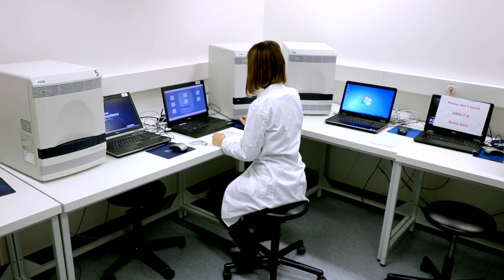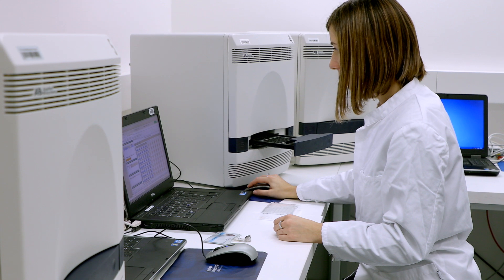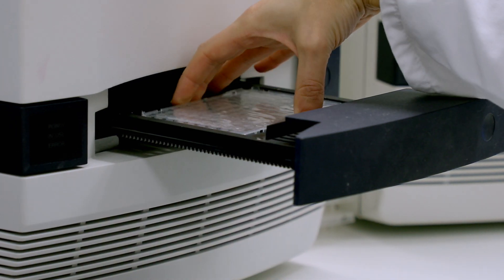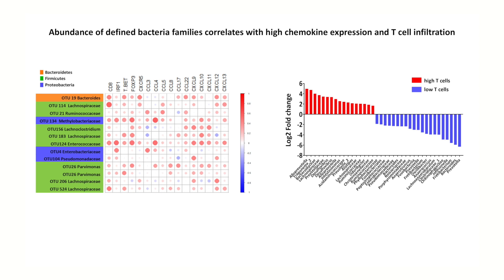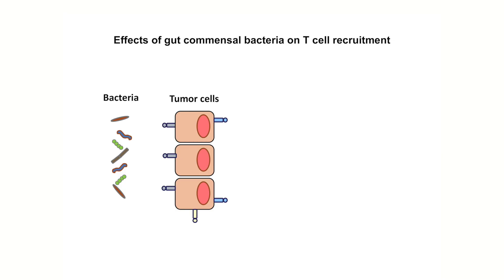Prompted by these findings, we analyzed the gut flora composition of human colorectal cancer samples displaying high or low T cell infiltration as assessed by immunohistochemistry. We could identify a group of bacterial families whose abundance is associated with high expression of chemokine genes and high infiltration by T lymphocytes.